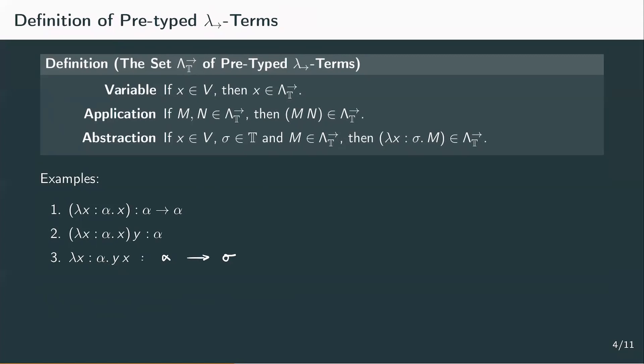So we've decided y applied to x has type sigma and we know x has type alpha. Since y applied to x is an abstraction, and x is of type alpha, y would need to be an abstraction with an input of type alpha returning something of type sigma — so y would need to be of type alpha to sigma. These conclusions can be done for any pre-typed term to validate that the types fit and determine what type the free variables need to have. This process is called derivation, and might be familiar from courses like logic or mathematical theory.